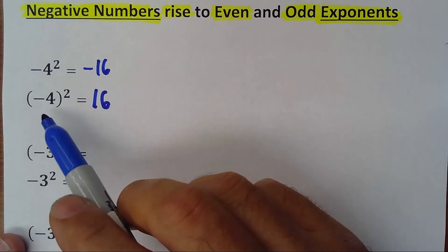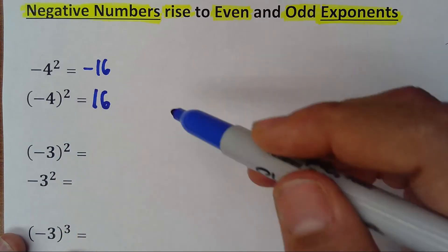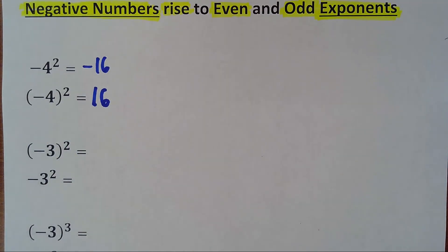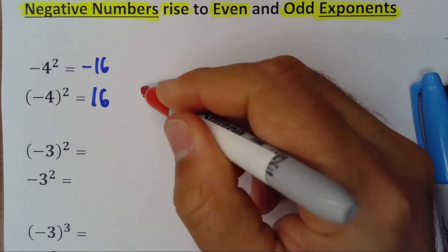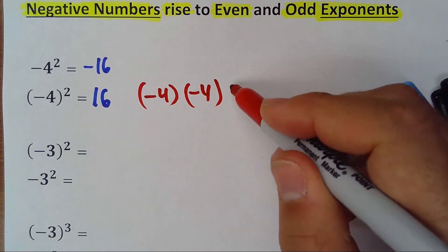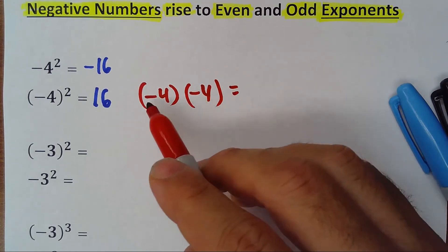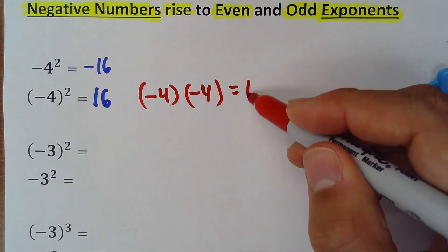The why is this. When I have negative 4 raised to the second power inside parenthesis, let me write in a different color, this means that you have negative 4 times negative 4. So, basically you're multiplying the number, of course, and you're multiplying the signs. Minus times minus is plus. That's why this one is equal 16.